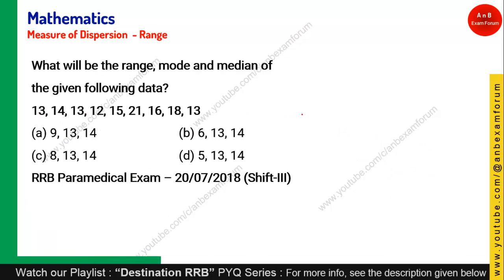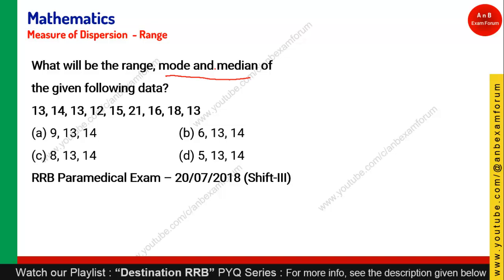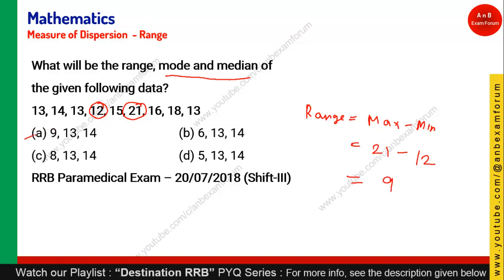Coming to the next question — it is very similar to question number one, but they have asked mode and median as well. Let's find the range first. Range is max minus min. The maximum value is 21 and the minimum is 12. So 21 minus 12 is 9. Since the range is 9, you can straight away select option A as your answer without calculating mode and median. Option A is the right answer.